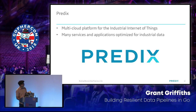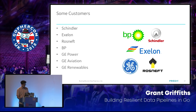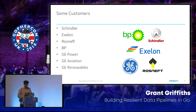What we call our platform is called Predix. It's built on a couple of different cloud platforms, but we also have a private cloud offering. Some of our customers include a lot of the GE businesses, but also companies like Schindler Elevators, Exelon, Rosneft, and BP Gas Companies.